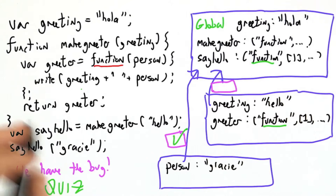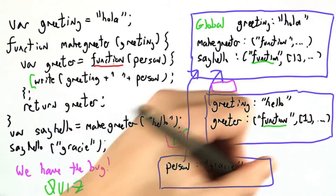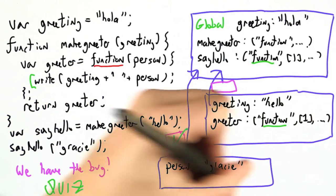When we're running a function, our official rule is you take the function body. Here's the function body, right, greeting plus person, and you evaluate it in that frame.